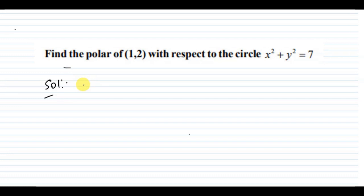So, the present question: Find the polar of (1,2) with respect to the circle x squared plus y squared equal to 7.